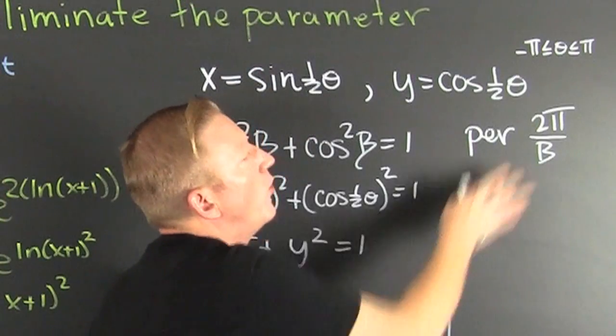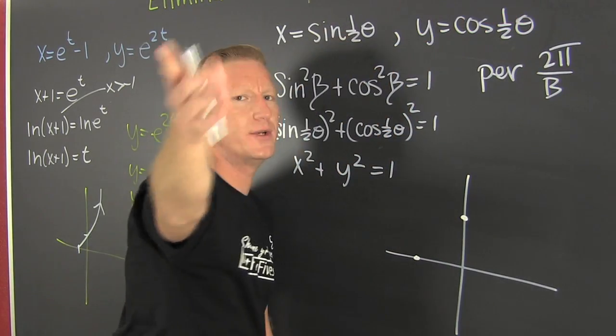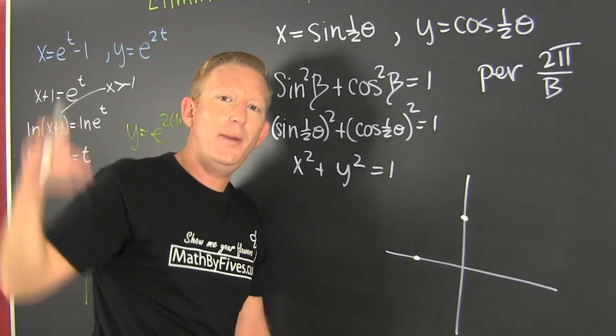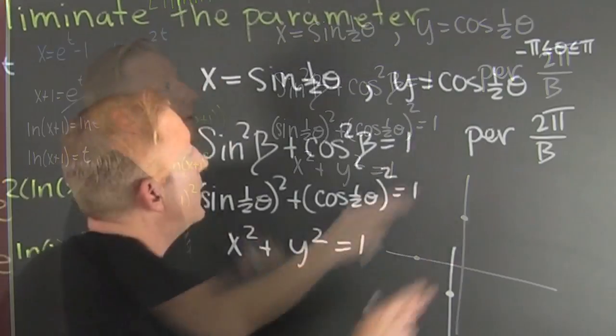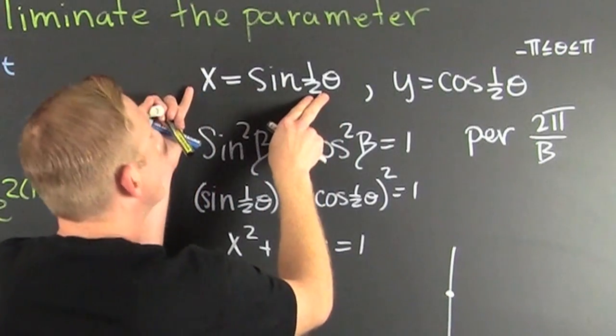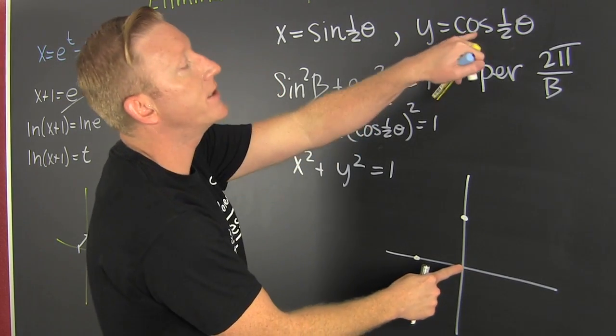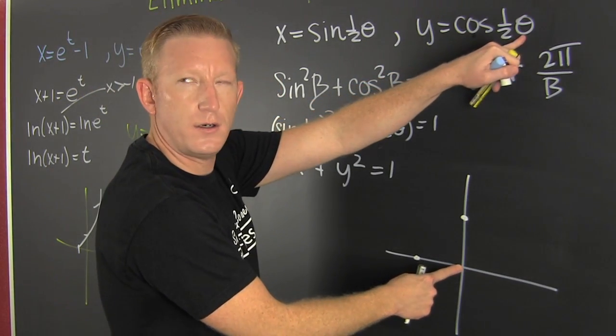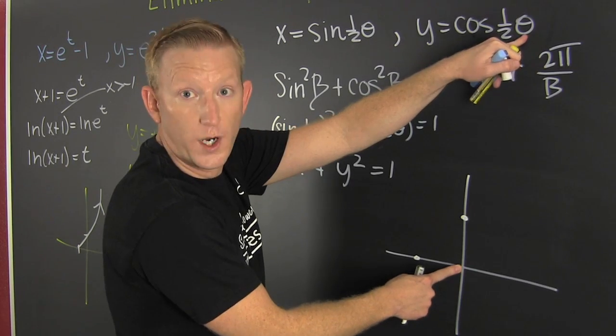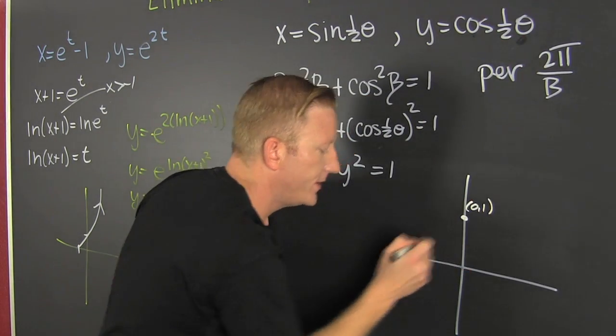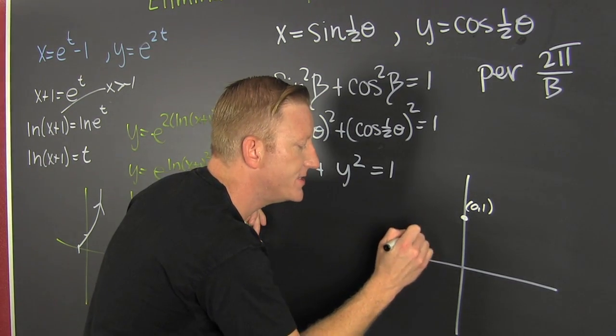This guy up here, that's one. When did that happen? When theta was equal to zero. I'm just picking some points in there. I know that it's a circle. I'm trying to get the orientation of this parametric equation. So I throw a zero in there. The sine of zero is zero. That means my x is zero. The cosine of zero is one. That's how that got there. That's the point zero, one. This is the point minus one, zero.